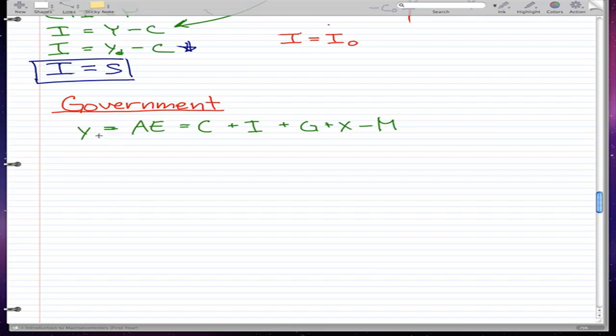We're going to talk about government. The first thing I want to mention is we've already seen this formula - it's familiar to us by now: Y = AE = C + I + G + X - M. So we're finally at the part where we talk about G.